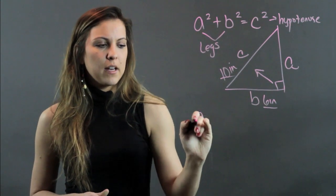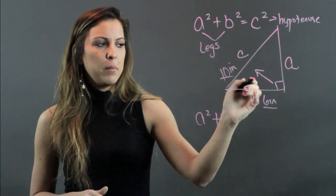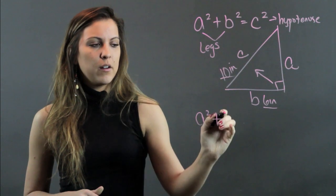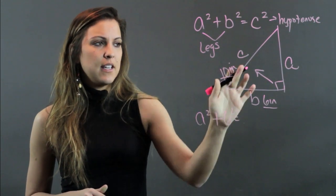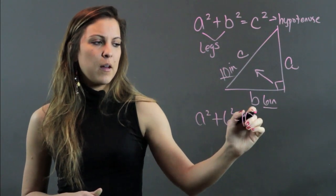So I don't know A, I'm going to leave A alone. I do know B is 6 inches, so I'm going to write 6 squared. C is 10 inches, so I'm going to write 10 squared, and now I'm just going to simplify.